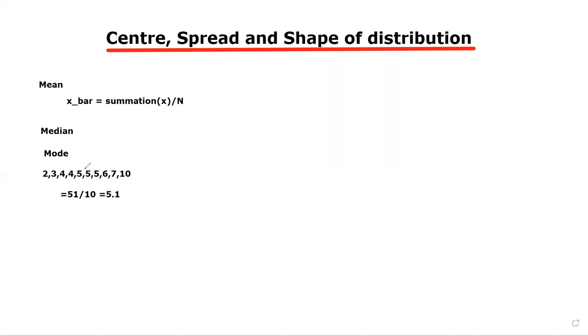Your median value will be the average of two middle values. That is, there you will have two middle values. If we go from the first 2, 3, 4, 4 and last 10, 7, 6, 5, so you have two middle values, 5 and 5. So your median will be the average of these two. That is 5 plus 5, 10 by 2, which equals 5. 5 will be your median.